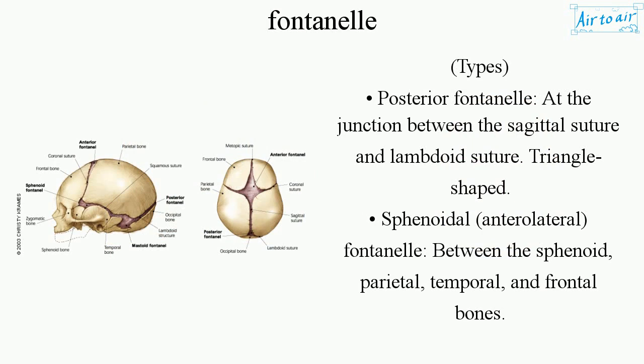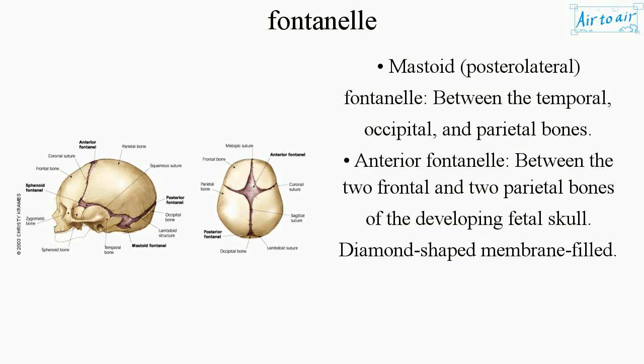Types of fontanelles: Posterior fontanelle — at the junction between the sagittal suture and lambdoid suture, triangle-shaped. Sphenoidal Anterolateral Fontanelle — between the sphenoid, parietal, temporal, and frontal bones. Mastoid Posterolateral Fontanelle — between the temporal, occipital, and parietal bones. Anterior fontanelle — between the two frontal and two parietal bones of the developing fetal skull.